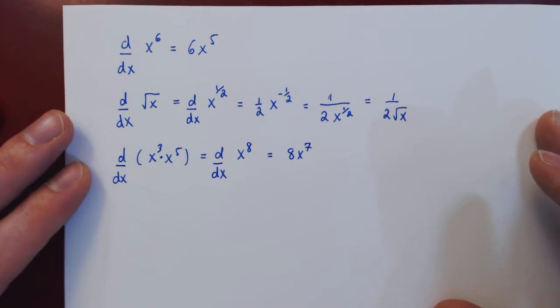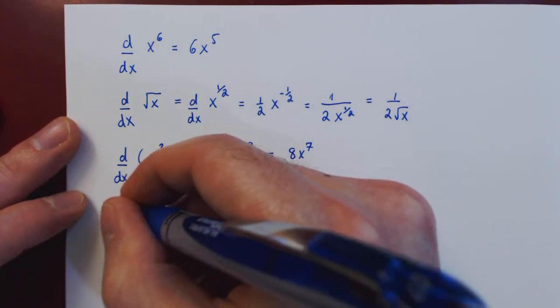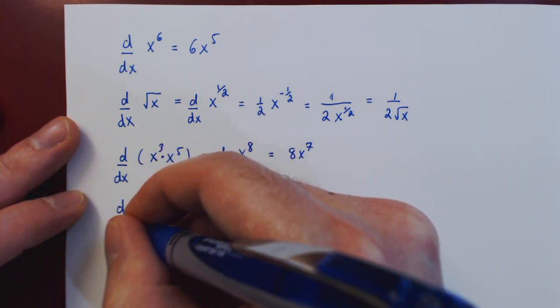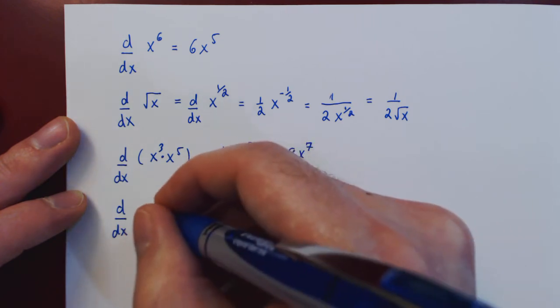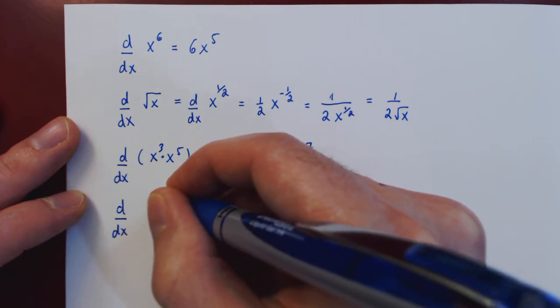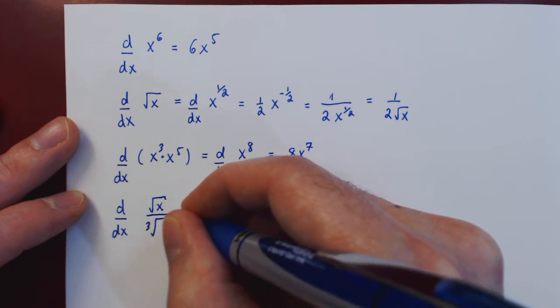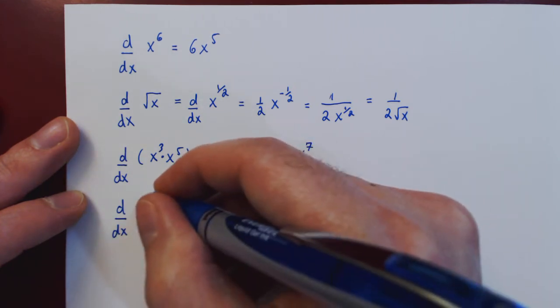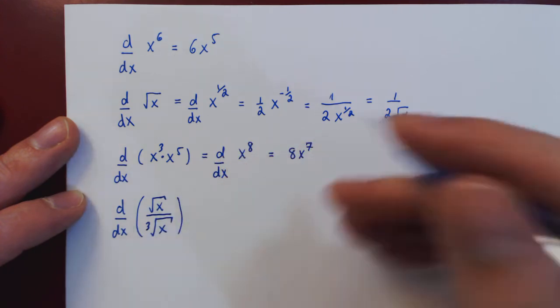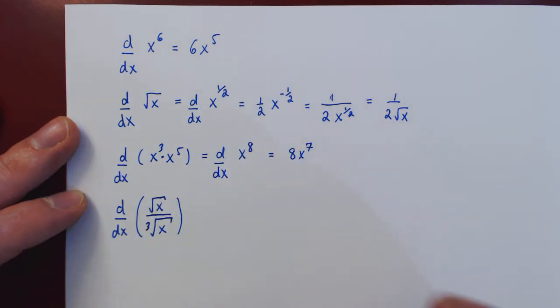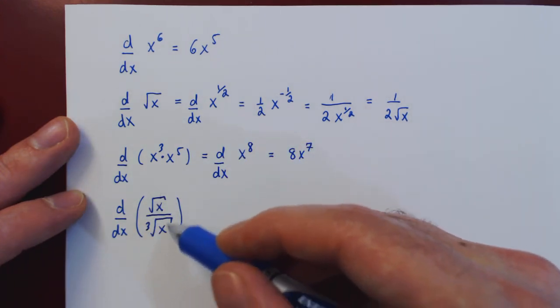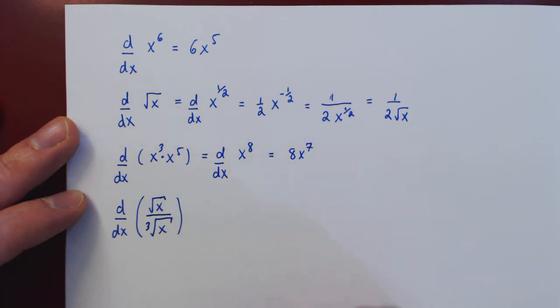And let's do one last example. If we have the derivative with respect to x, say, of the square root of x, over the cube root of x. Well, again, before we can differentiate, now this quotient of two roots, we have to simplify this to a single power of x.